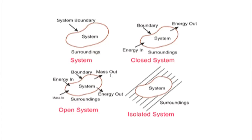If there is no mass transfer across the system boundary, but there is some energy transfer across the system boundary - energy gets in, energy goes out - then that system becomes a closed system. So a closed system is one where there is no mass transfer, but energy transfer happens across the system boundary. An isolated system is one where you cannot have mass transfer and you cannot have energy transfer, so that system is completely isolated from the surrounding with no impact from it.